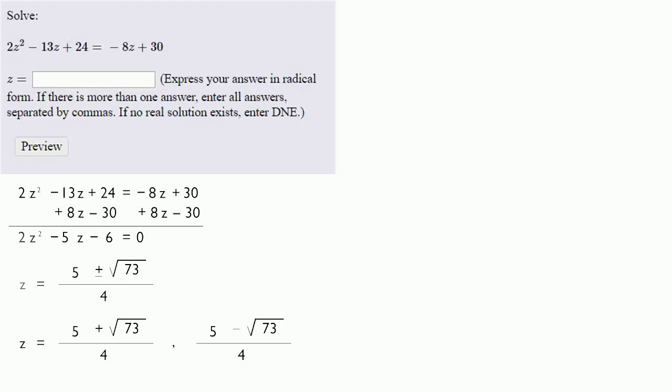So our answers are 5 plus the square root of 73 over 4, and a comma to set off the second answer, 5 minus the square root of 73 over 4. And if we look at the preview, we see what we've typed is not what we wanted to type.